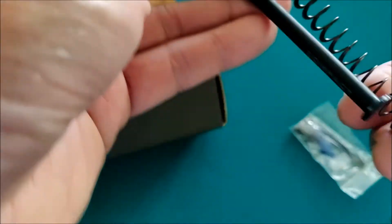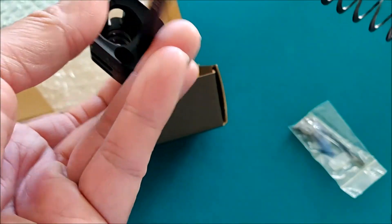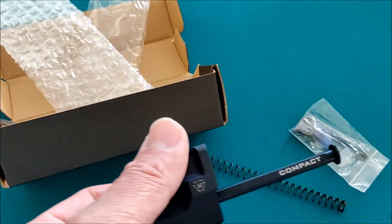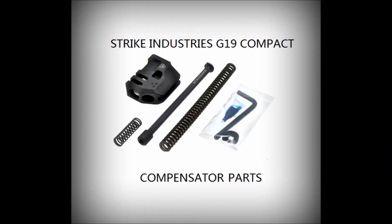And then, yan yung recoil spring kusan yung siya i-attach sa guide rod. So ito yung parts nya. So ito yung mga parts ng compensator ng Glock 19.